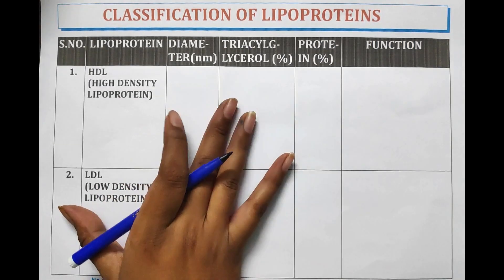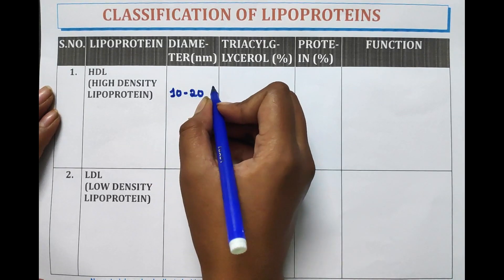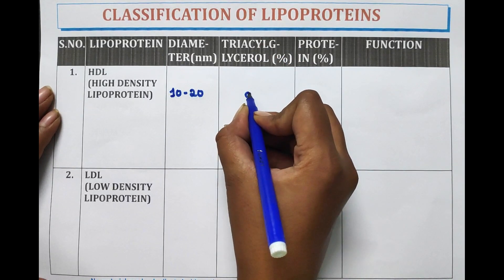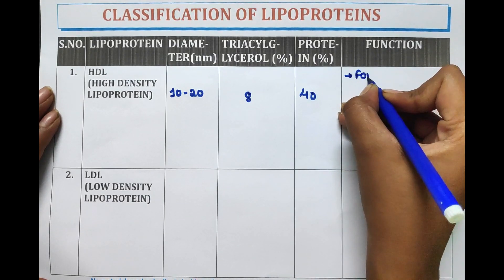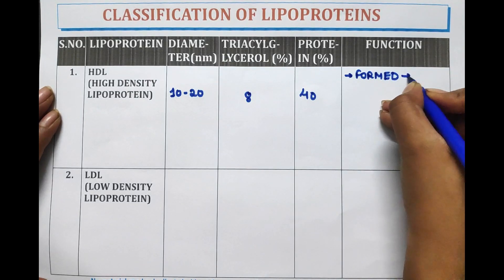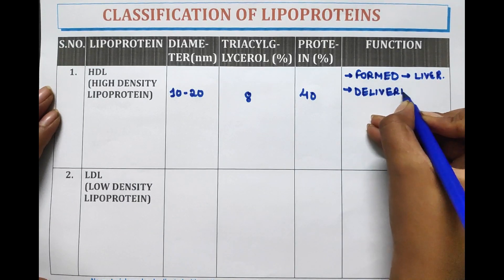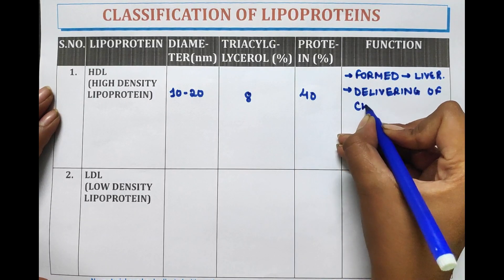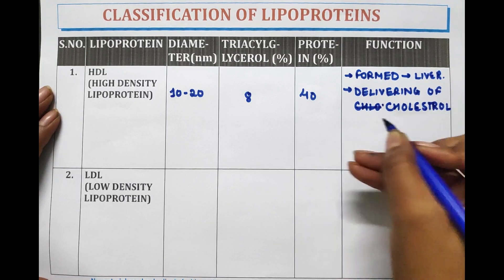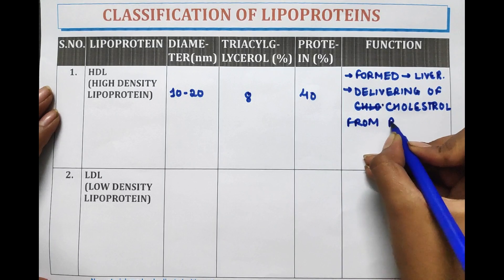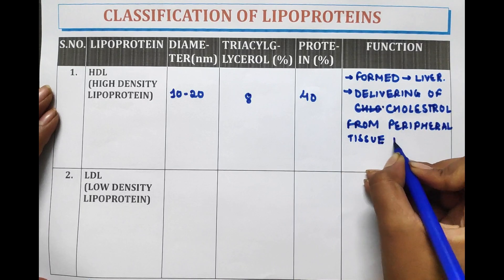Now let's detail out each type of lipoprotein. HDL — high density lipoprotein — ranges from 10 to 20 nanometers in diameter. Triglyceride is present at 8% and protein at 40%. Regarding its function: HDL is formed in the liver, and it helps in delivering cholesterol from peripheral tissue to the liver.